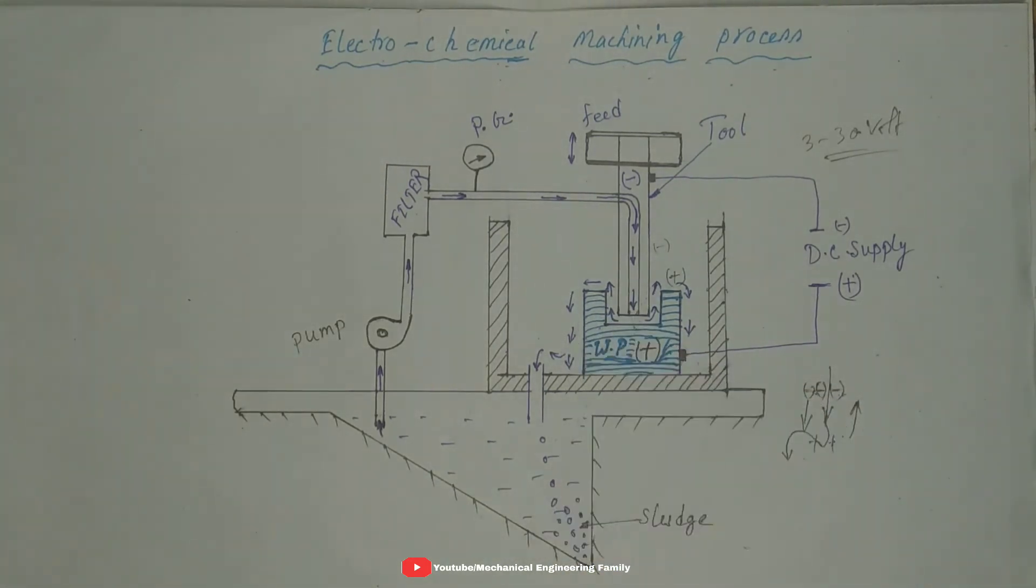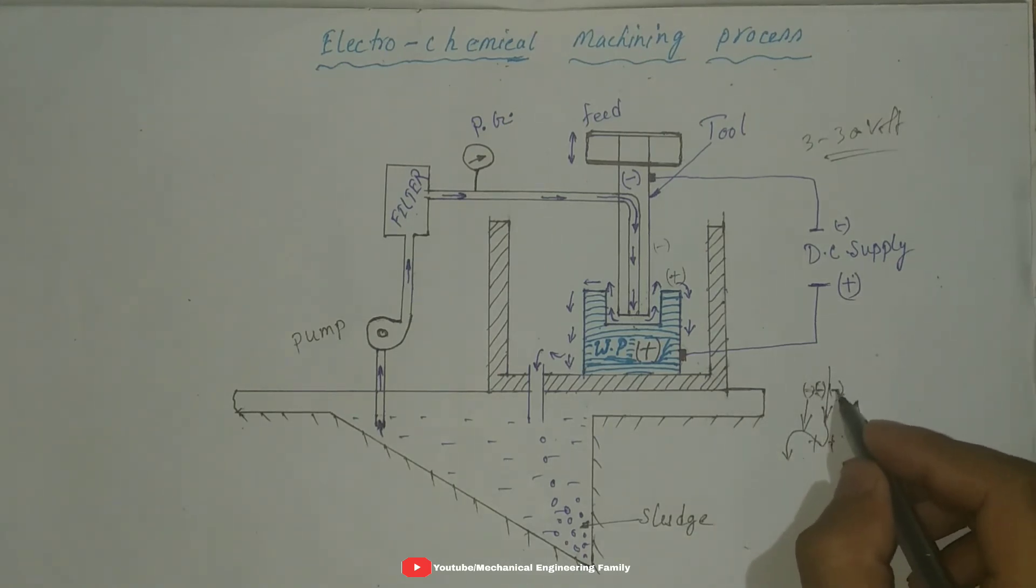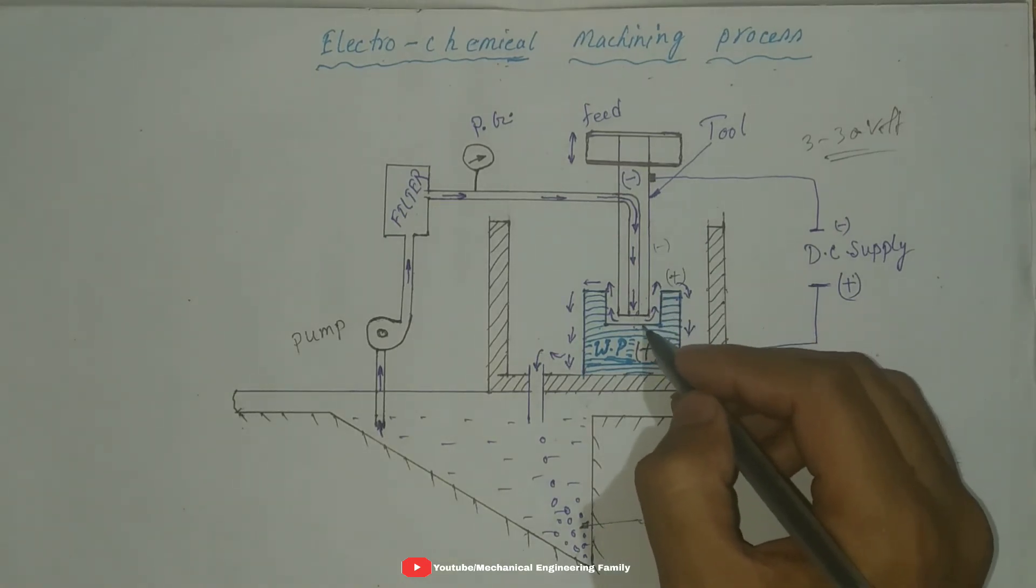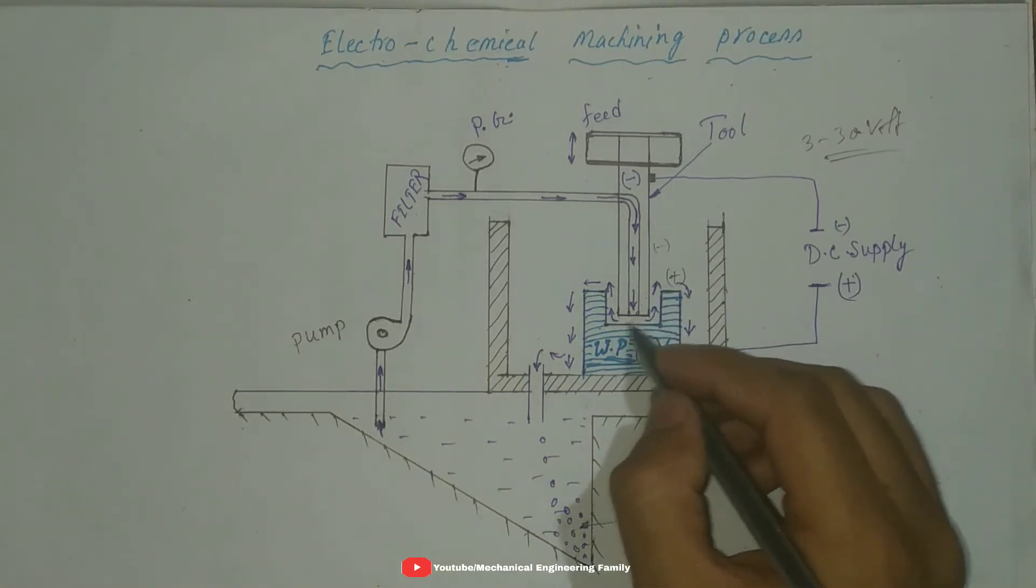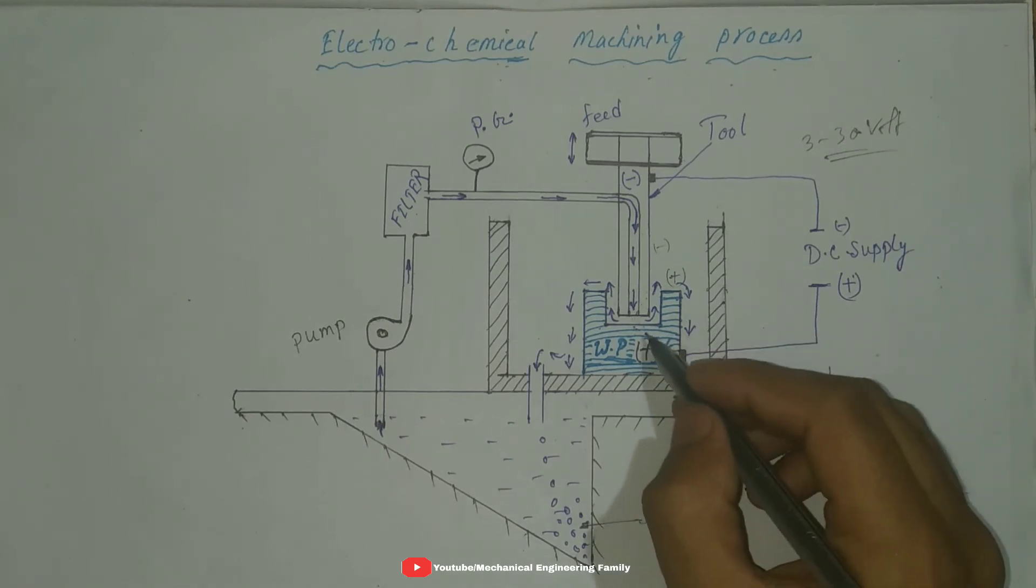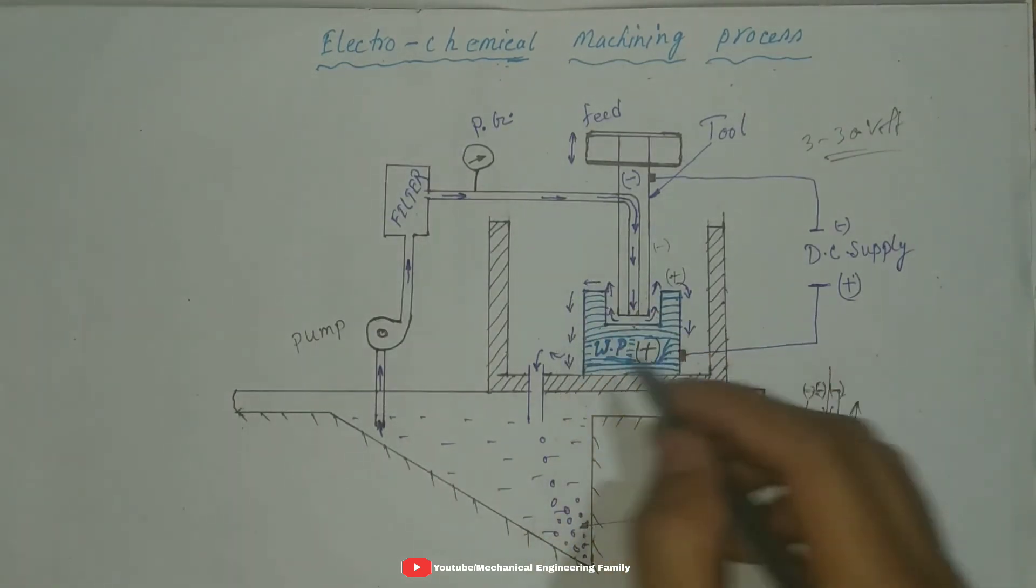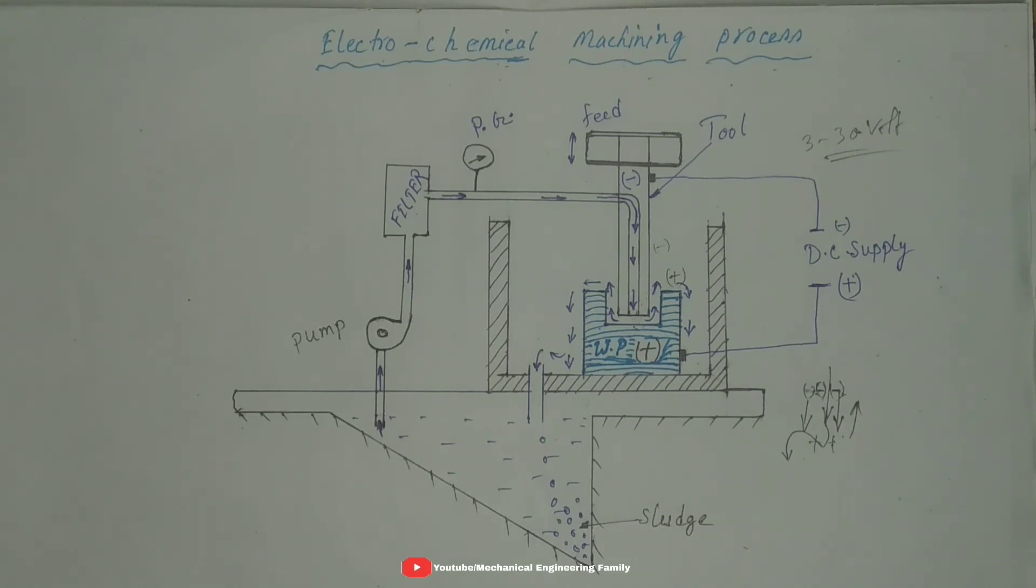But the negative charged particle strikes the workpiece and dissipates the workpiece in the form of sludge. And the electrolytes carry this sludge out. Thus, the true replica of tool shape is produced on the workpiece.